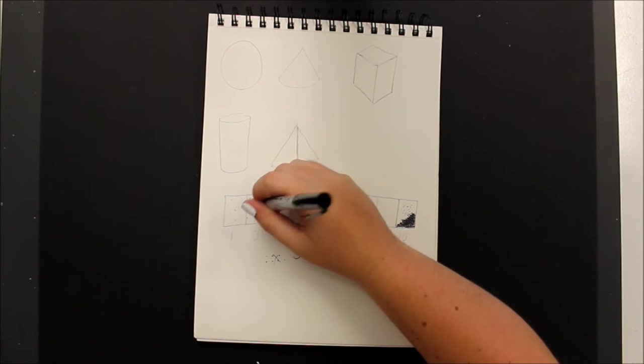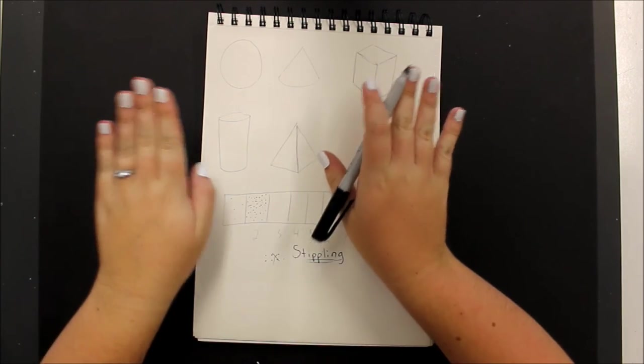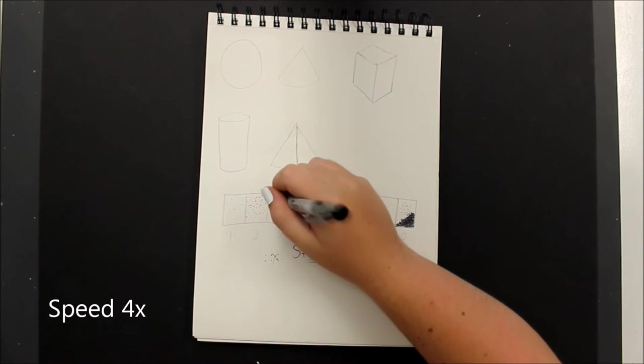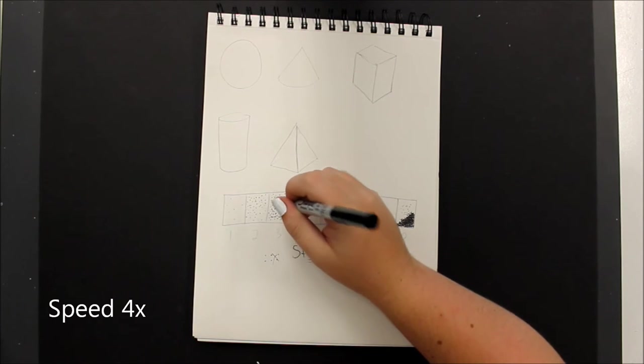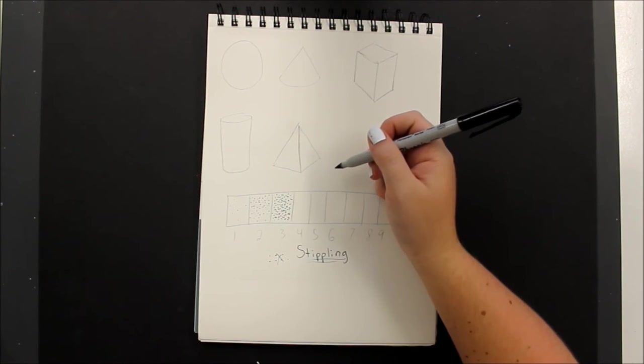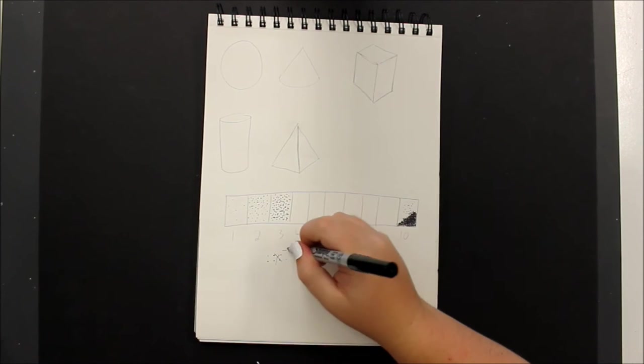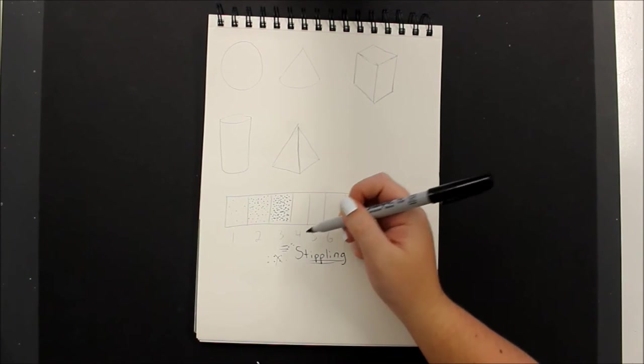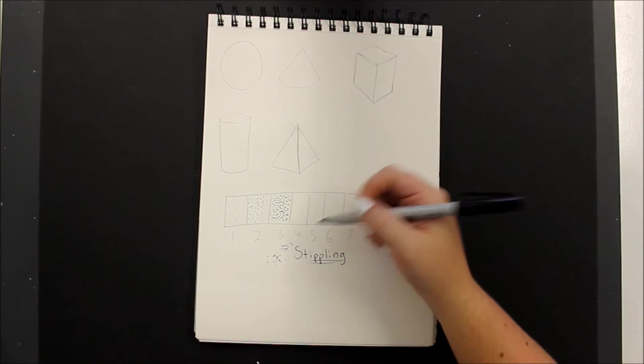And just as before with your values, you're not going to outline the differences between each value. It's going to be an edge where the two values meet. One thing you want to try to avoid is making your dots into lines. Don't drag your dots, just make sure it is an actual dot. Like that one dragged, but that one is the dot. Try not to drag as you lift.